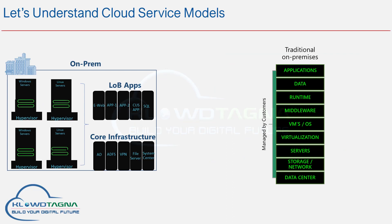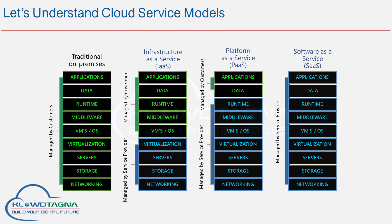It is time to understand the different cloud service models. Let's take a breakdown of any application. For example, you have a line-of-business application running inside the operating system, your operating system is powered by a hypervisor, your hypervisor is located on a physical server, and the physical server is placed inside the data center. In the typical on-premise model, the entire stack is managed by the end customer — from the application all the way down to the data center. In the cloud service model, there are three flavors: Infrastructure as a Service, Platform as a Service, and Software as a Service.